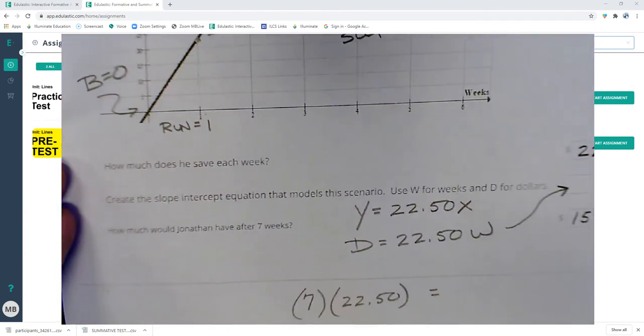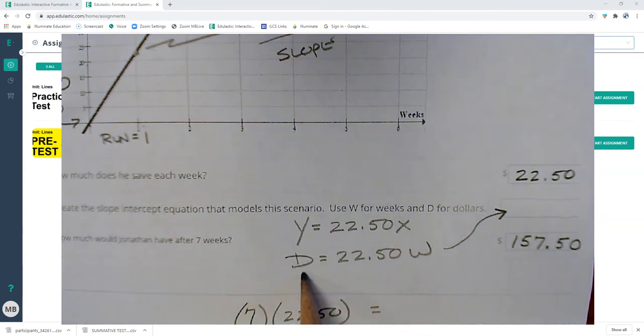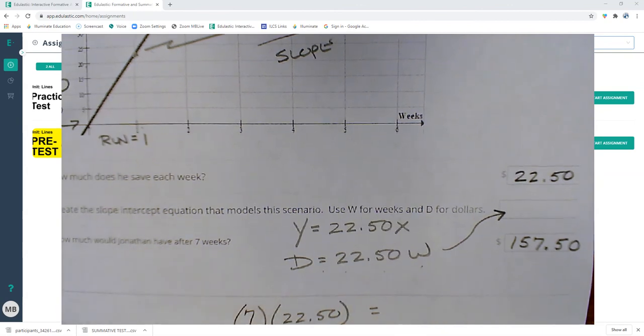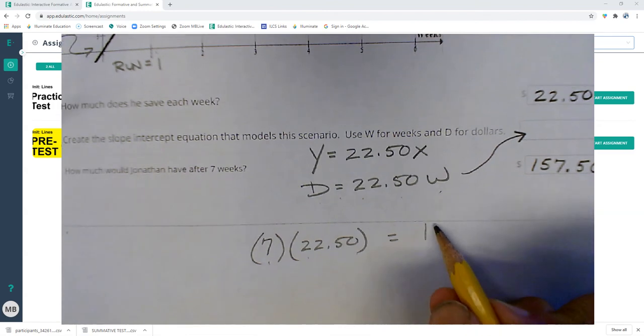So I put it all together, and I get y equals 22.50x, but I swap out the w and the d, so dollars equals 22.50 times the number of weeks. And then how much do I have after seven weeks? Well, if I'm making 22.50 a week times seven weeks, that's 157.50.